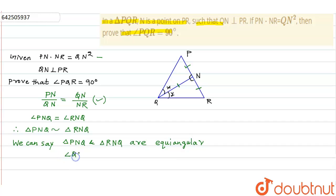angle QPN is equal to angle NQR, and also angle NQP is equal to angle NRQ. So this is equal to Y and this is equal to X.